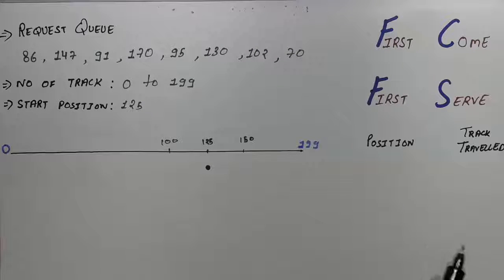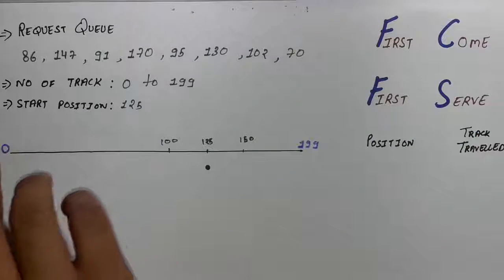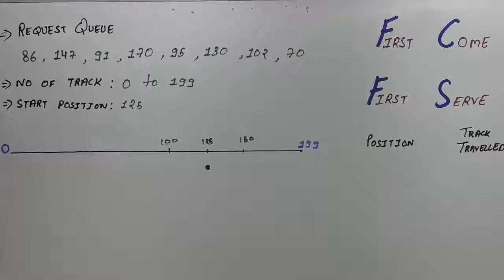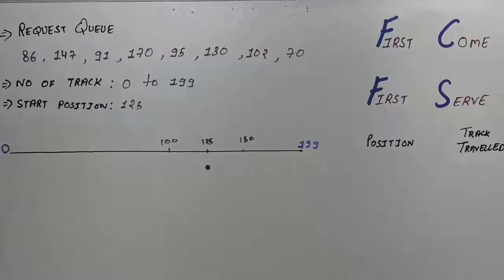Then we have to serve the request according to the request queue because this is First Come First Serve. So just serve the request according to the order. Another thing you have to look for is the position and track traveled. You have to make this diagram so that we can find out the average track traveled.